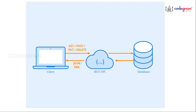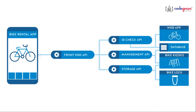Every application you see now needs an API so that it gets the request — building a web application, communicating with the server, and returning data from the database. These four HTTP methods play a vital role: GET, POST, PUT, DELETE. Let's understand each one of them.